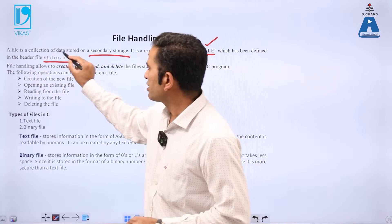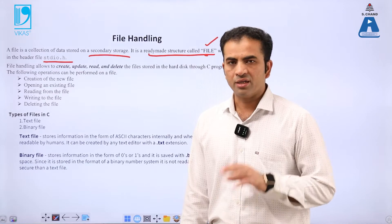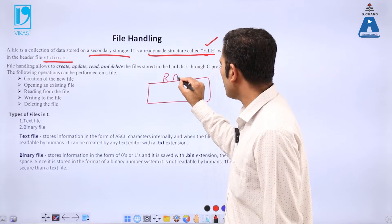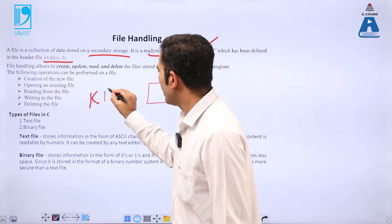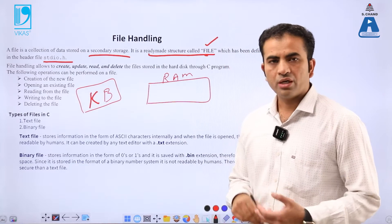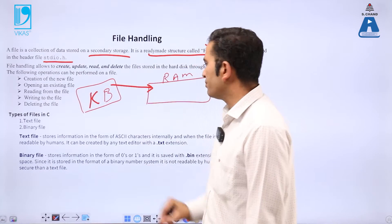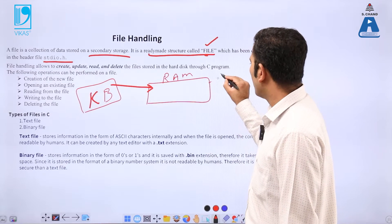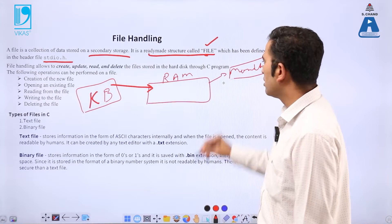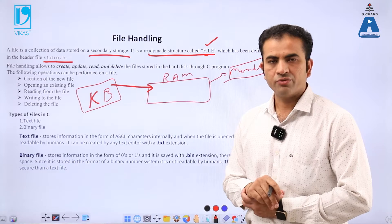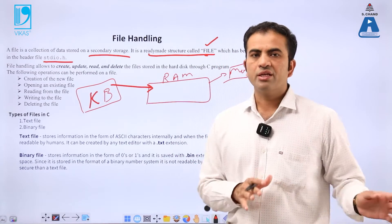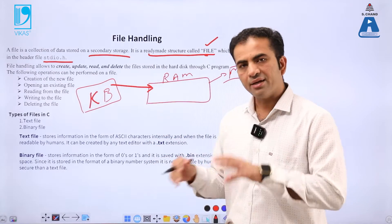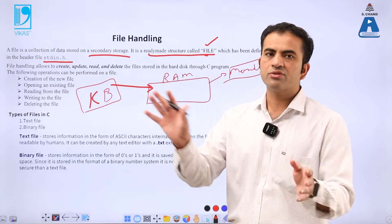It is a collection of data stored on secondary storage. To understand the concept of file handling: whatever you are pressing on the keyboard goes inside the RAM, and whatever program you are writing from the keyboard is going inside the RAM and displayed on the monitor. Nothing is saved permanently in the hard disk. When your program executes, everything goes out. When you run the same program again, variables go inside the RAM and stay there, and when the program is done, they are deleted from the RAM.